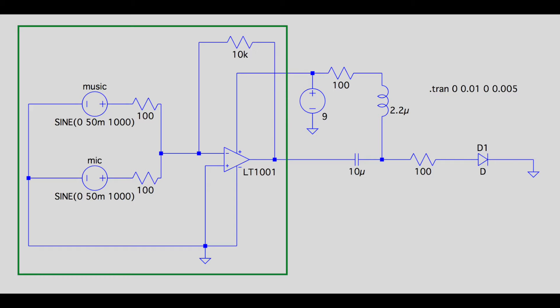Because both inputs have about the same voltage level of 50 millivolts, their resistors in the mixer are given equal weight. Note that we use 0 volts and 9 volts as the bounds for the op-amp, since we can't get negative 9 volts given only two batteries.